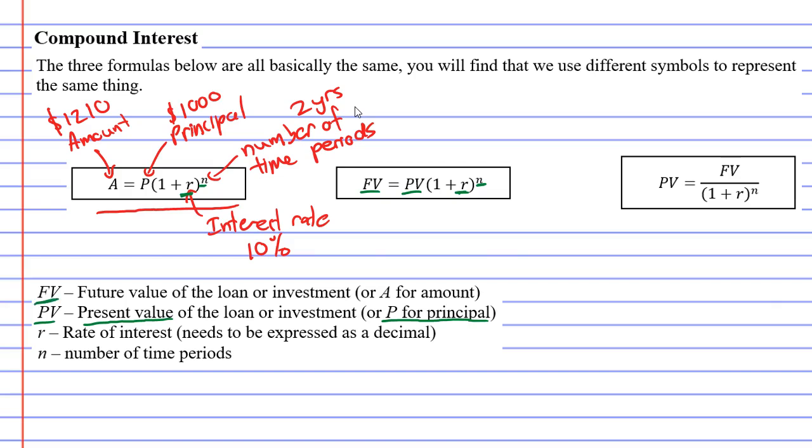And FV stands for future value, which is just like the amount or A. It's the amount it's going to be in the future. So these formulas are exactly the same. They just use different pronumerals.